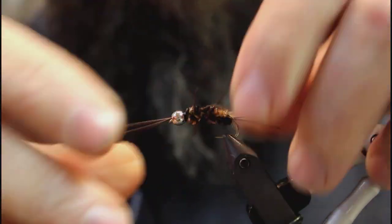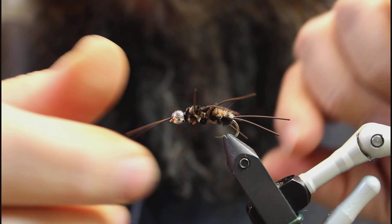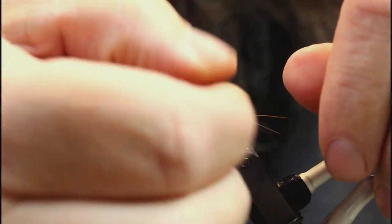Now you can kind of go through this fly and start tweaking all your legs. Legs and antennas, get them where you want them.